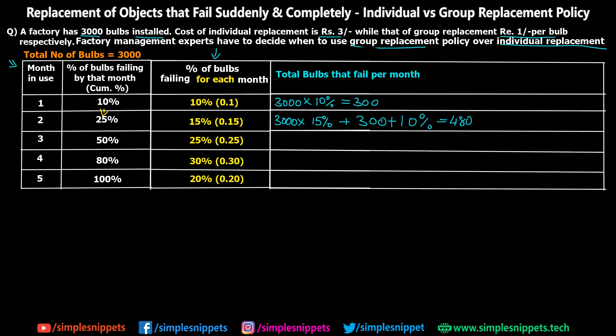Let me explain this once more. For the first month, 10% of 3000 bulbs fail — so 300 bulbs are replaced by end of month one. For the second month, out of 3000 original bulbs, 15% are going to be failing. But we have also replaced 300 bulbs — those 300 are new, so for them it is still their first month. Their failure percentage is 10%, not 15%. That's why we calculate their failures separately using the first month's rate.